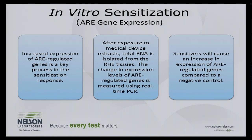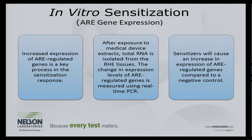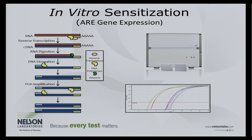The second in vitro sensitization assay uses ARE (antioxidant response element) genes, which are expressed in the presence of a sensitizer. We expose medical device extracts to the same RhE tissues used in irritation testing. Then we break up those tissues, isolate the RNA, and use PCR to measure expression of ARE genes. If those genes are expressed, it indicates a sensitizer is present. We compare expression levels against a negative control to determine sensitization potential.